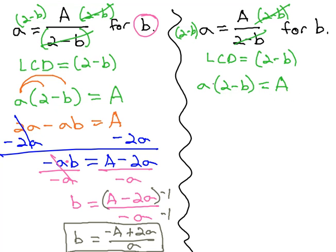But rather than distributing the a through the parentheses, we have another way we can get rid of it, and that is to divide both sides by that a. Dividing it out of the way, because it's a times the parentheses, to get rid of it we divide, giving us 2 minus b equals capital A over lowercase a.